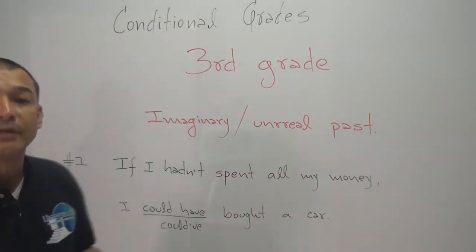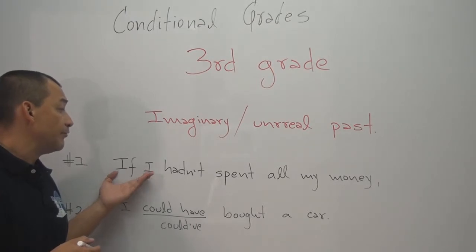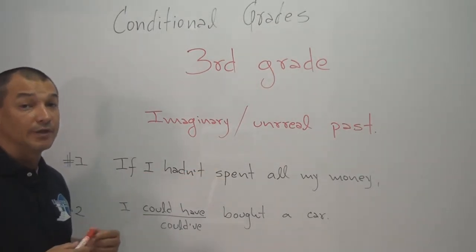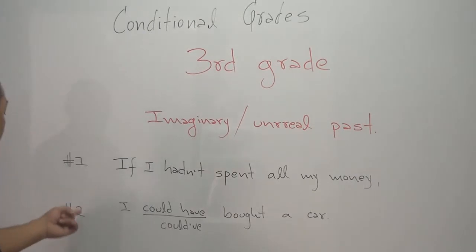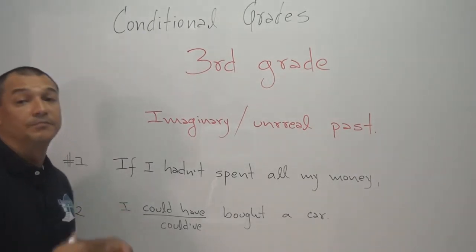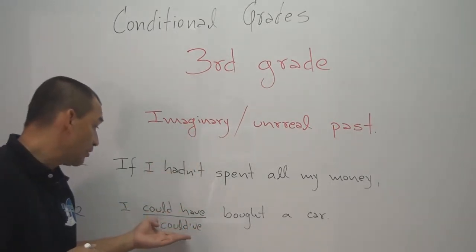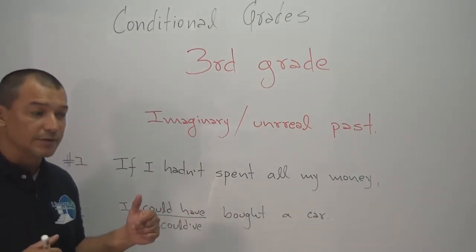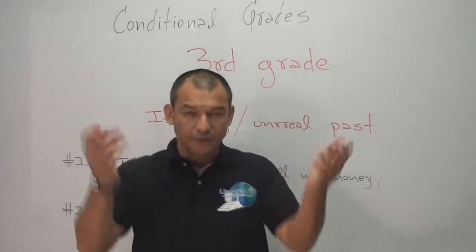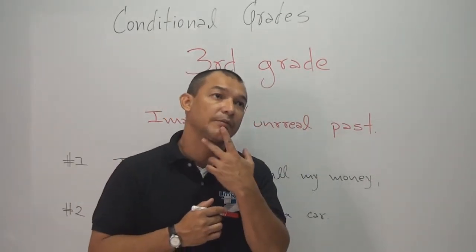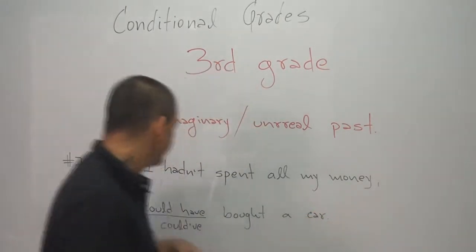¿Qué pasó realmente entonces? Primera cláusula: 'If I hadn't spent all my money' — si no me hubiese gastado todo mi dinero. La realidad, ¿cuál es? Me lo gasté. Hasta el último penny. Acción número dos: 'I could have bought a car' — podría haber comprado un carro. Ese sería el resultado de lo que no hubiese hecho. Pero la realidad es que no pude comprar ese carro. Entonces me estoy imaginando ambas situaciones. Ambas realidades son irreales. Yo las estoy imaginando. Si no me hubiera gastado toda mi plata — la gasté. Habría comprado un carro — no lo compré. No pude.